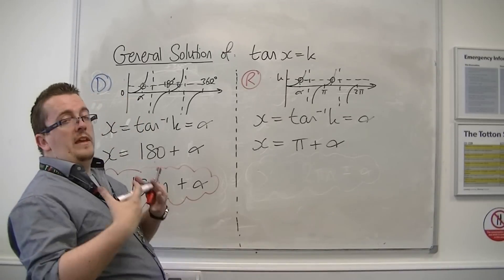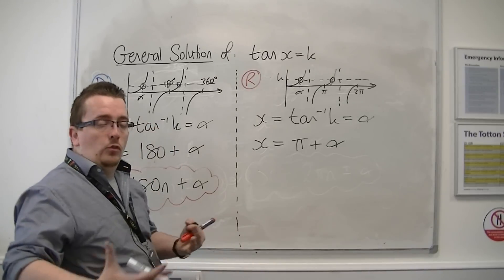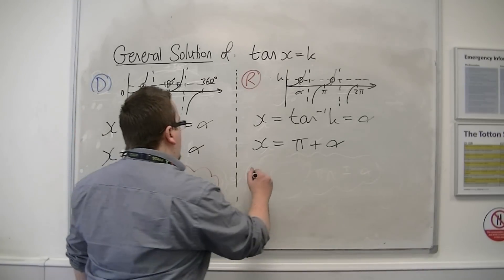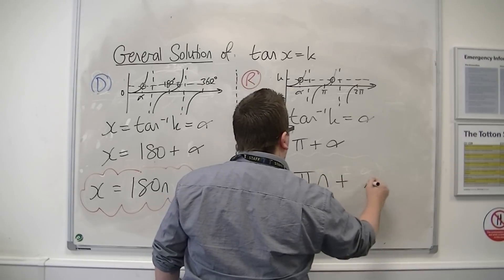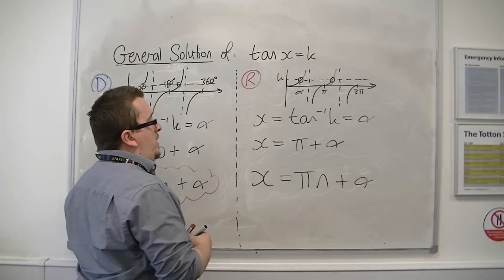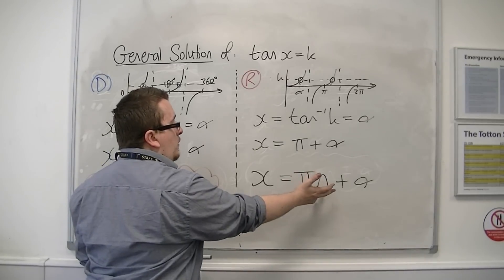But because the period of tan in radians is already pi, the general solution is pi n plus alpha. Which takes care of this equation as well, when n is 1.